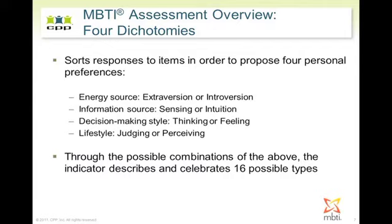The four themes are: energy source, information source, decision-making style, and lifestyle. Each one has two possibilities. Energy source has extroversion or introversion. Information source has sensing or intuition. Decision-making has thinking and feeling, and lifestyle has judging and perceiving. Through the combinations of those possibilities, it gives rise to 16 possible types.